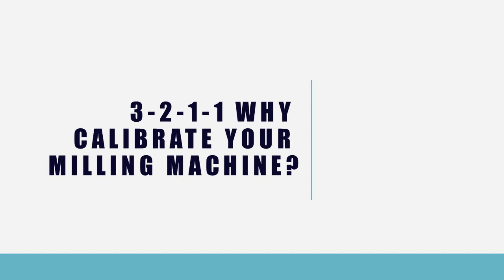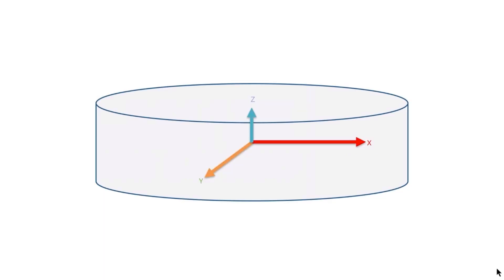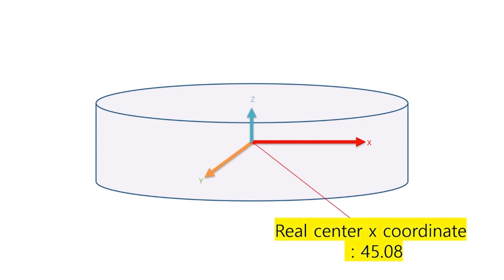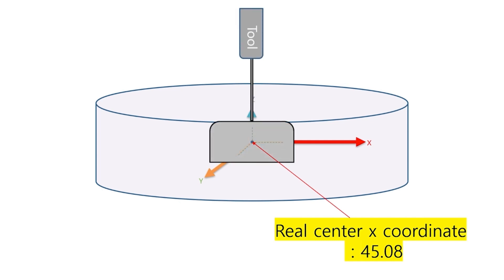The first machine has a misaligned axis. Most machining errors occur because the machine's real and imaginary coordinates are different. Let's take a machine with the y-axis as the rotation axis. Since it rotates around the y-axis, most of the machining errors are in the x-axis direction. The machine has an x-axis coordinate of 45.08 mm, which is the center of the actual axis of rotation.